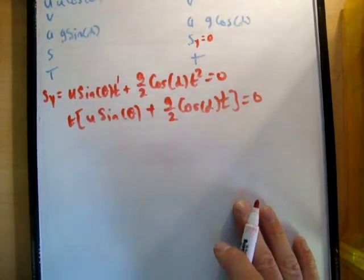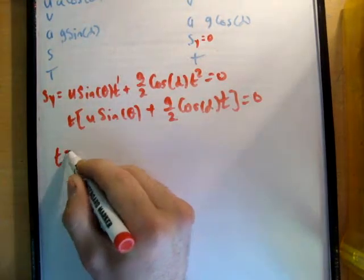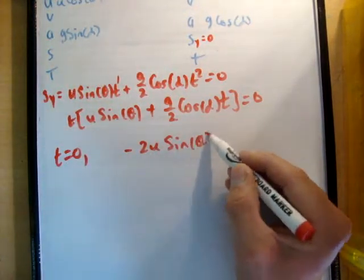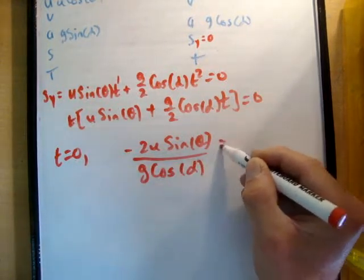Where you have two expressions multiplied together to create 0, one of them must be 0. So t is equal to 0 or negative 2u sine theta over g times the cosine of alpha is equal to t.